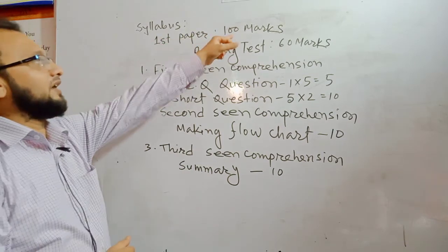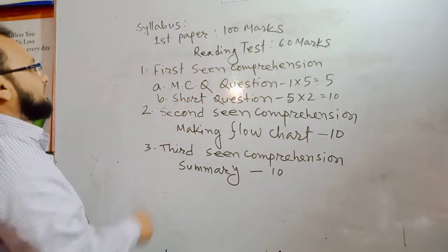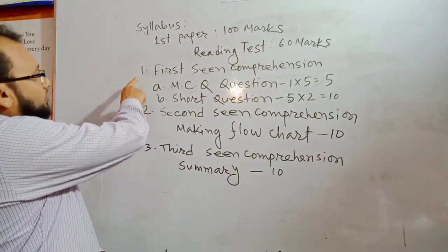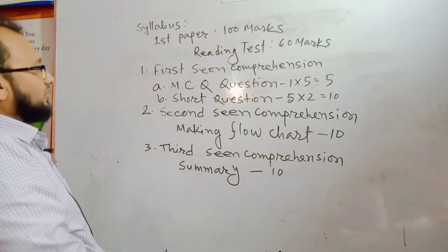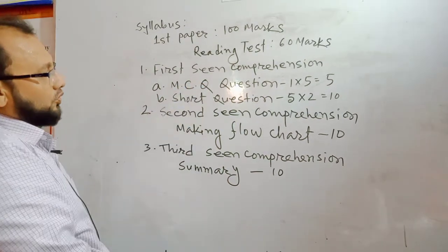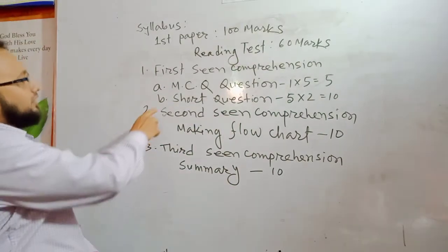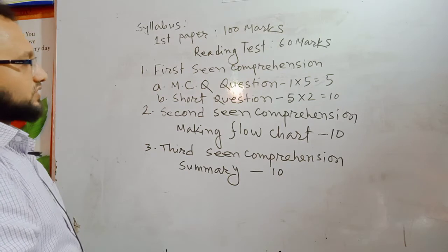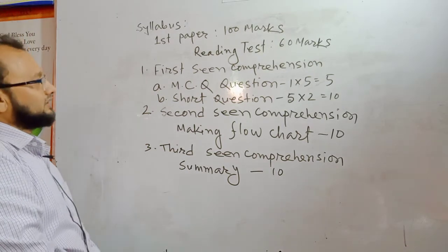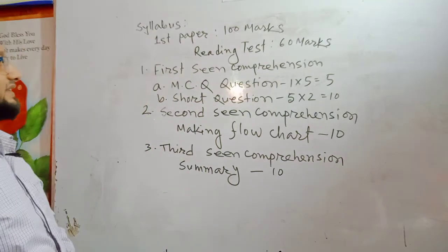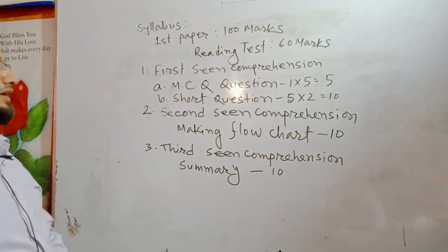In first paper, you have 100 marks. First, reading test — 60 marks. Question number one: first reading comprehension. There you have to answer MCQ questions — 1 into 5, that is 5 marks. Then you have to answer five short questions — 5 into 2, equal to 10 marks. Dear learners, this reading comprehension will be selected from your textbook EFT, English for Today, for class 11 and 12.